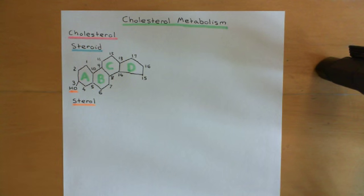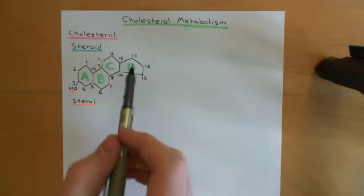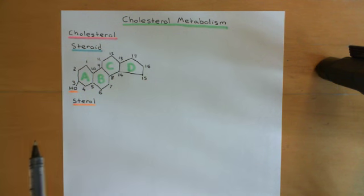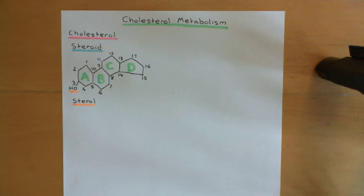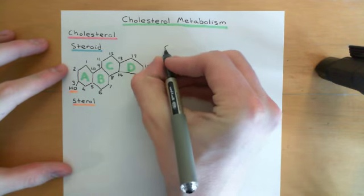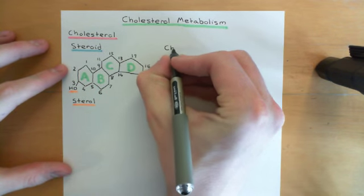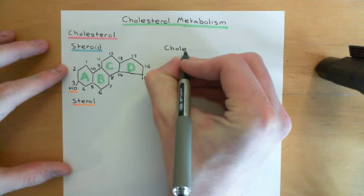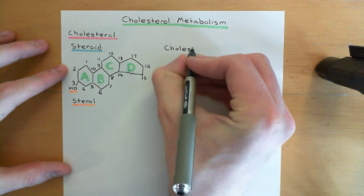To turn the steroid structure into a sterol molecule, all we need to do is take one hydrogen off the third carbon of the steroid structure and replace it with an alcohol group. The structure we now have is the basic foundational structure that all sterol molecules contain. All sterols are steroids because they contain the basic steroid structure, but of course not all steroids are going to be sterols.